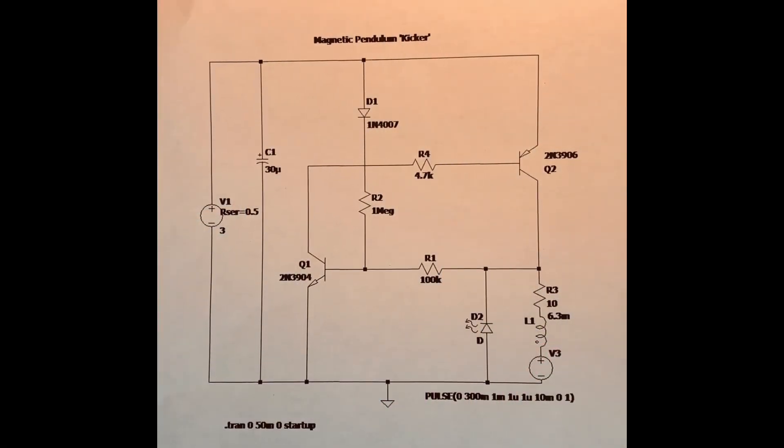Here is a view of the schematic which was drawn in LT Spice so that the simulator could be used. Just a brief description of some components: the battery source consists of 3 volts, two 1.5 volt batteries, and it will actually operate down to 2 volts. Then we have two transistors. In the bottom right corner we've got the magnetic coil L1 which has an inductance of 6.3 millihenries and a 10 ohm series resistance to represent the equivalent series resistance of the coil.